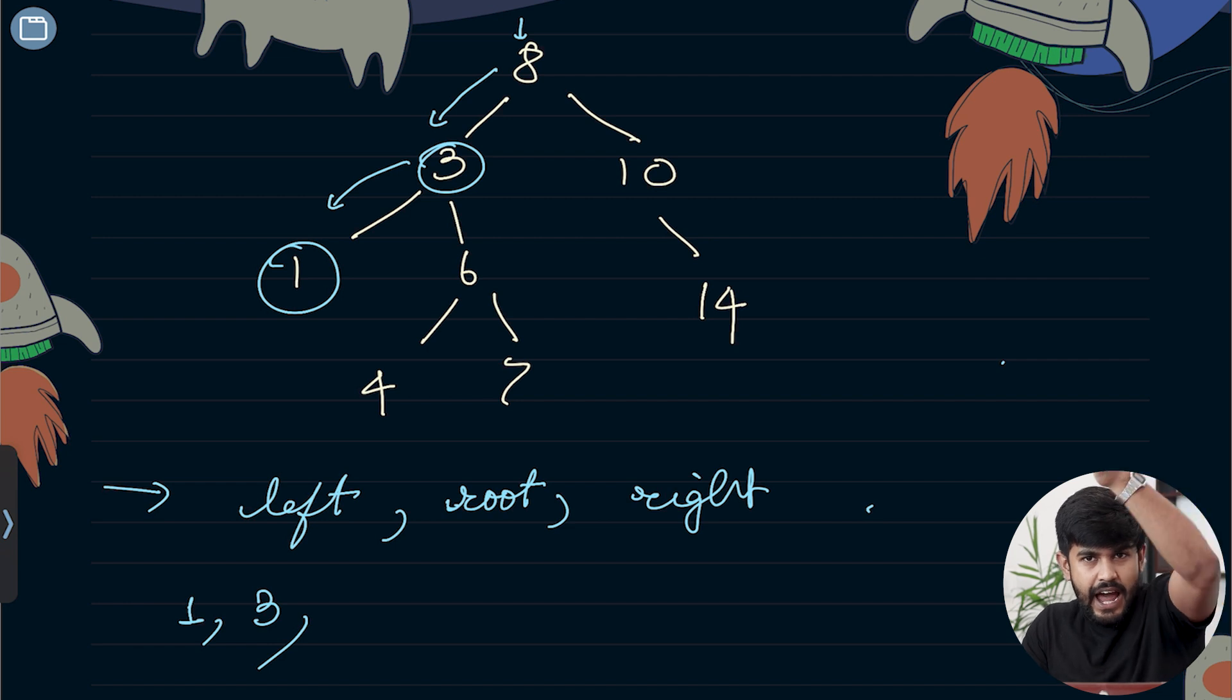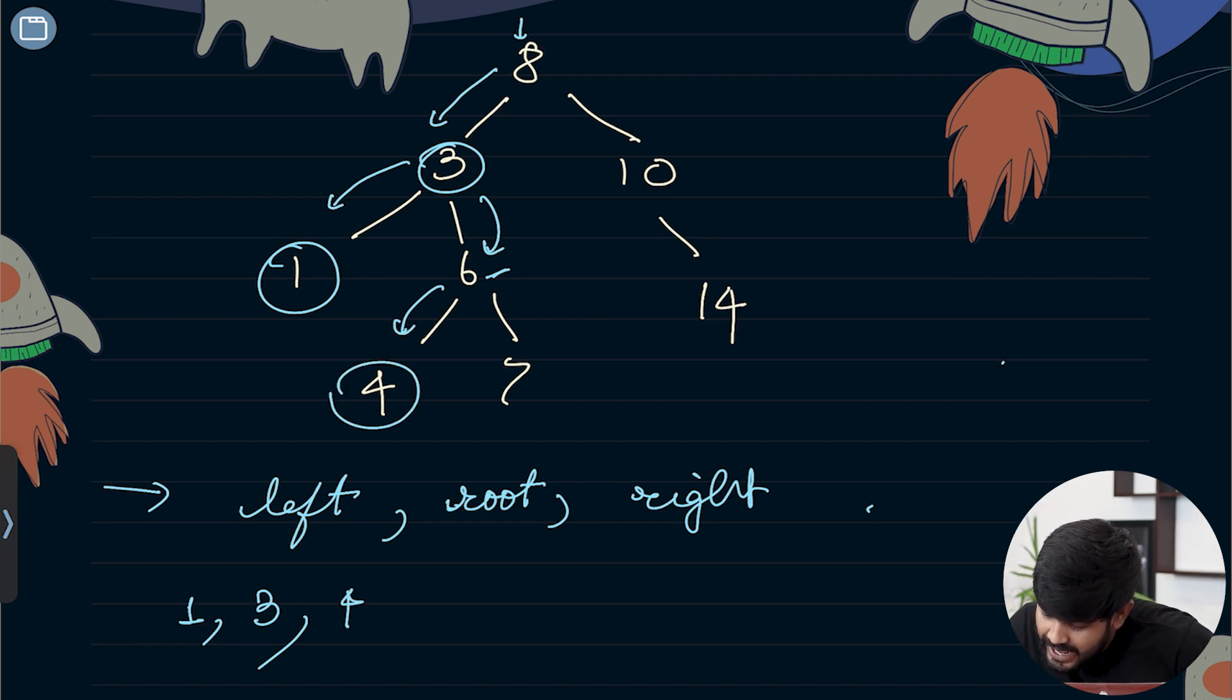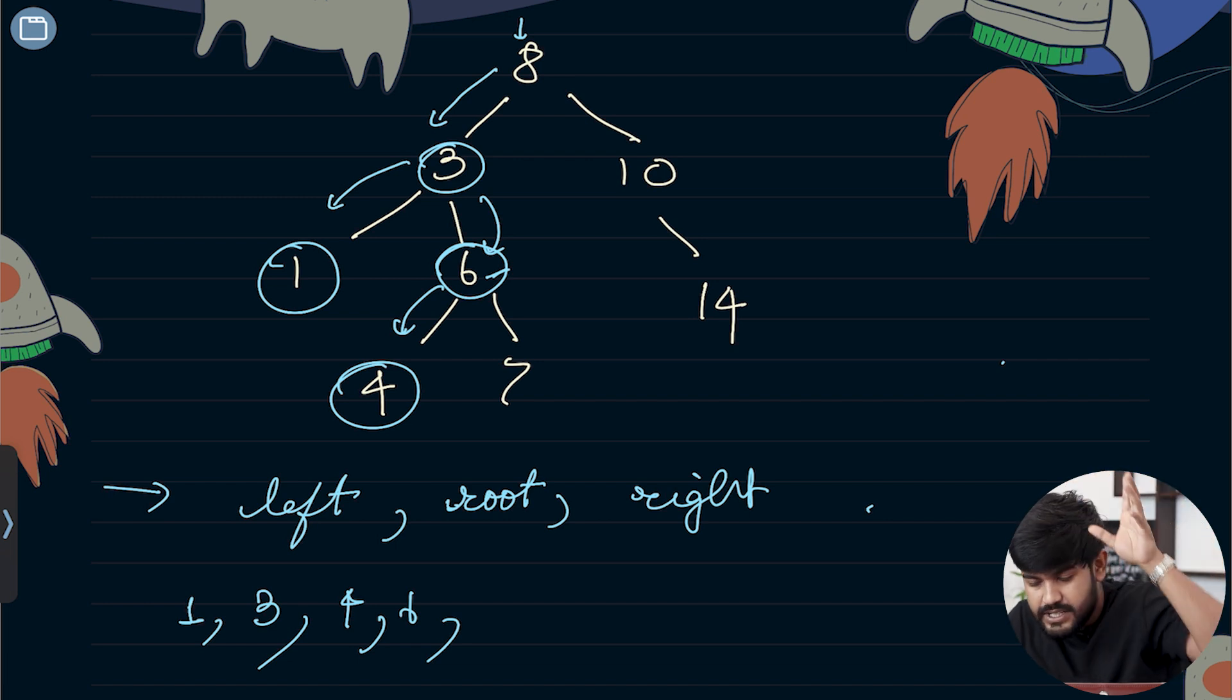Now when left and root are done, we go to the right side. We move to 6, and 6 asks, did you visit my left? No, not yet. 4 doesn't have a left so we visit it. Then as the left of 6 is visited, we can visit 6. As left and root are done, we visit 7.